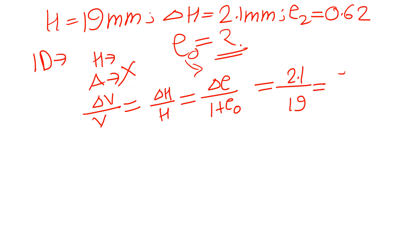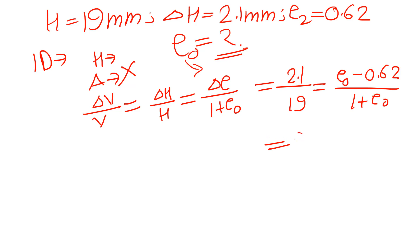So we get: (e0 − 0.62) / (1 + e0) = 2.1 / 19. Solving this equation gives e0 = 0.82. Therefore, 0.82 is the correct answer for this question. Thank you.